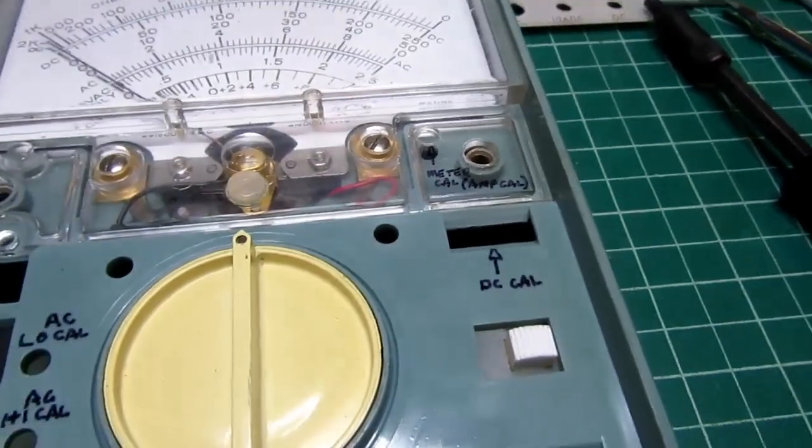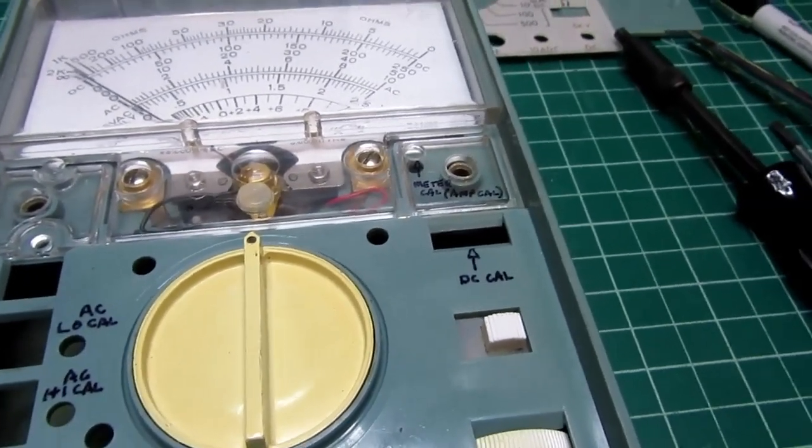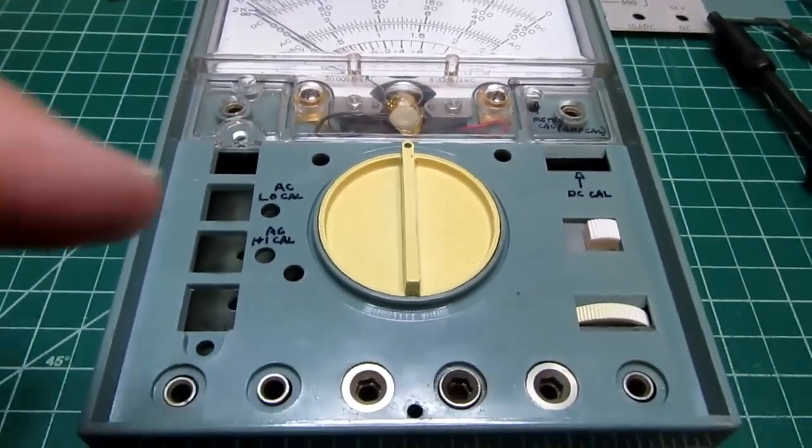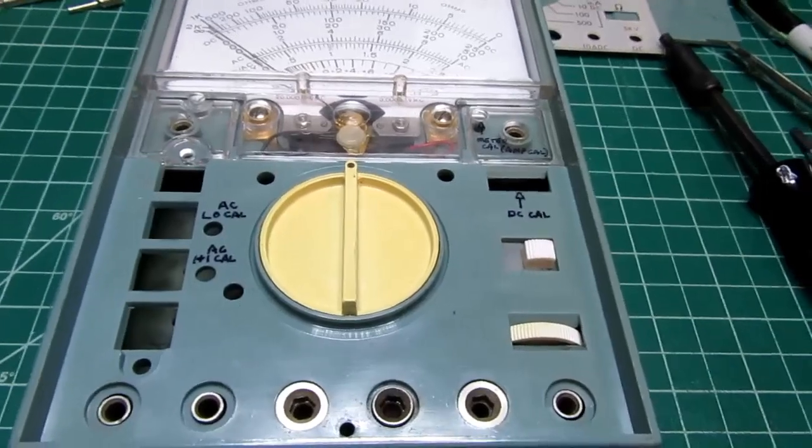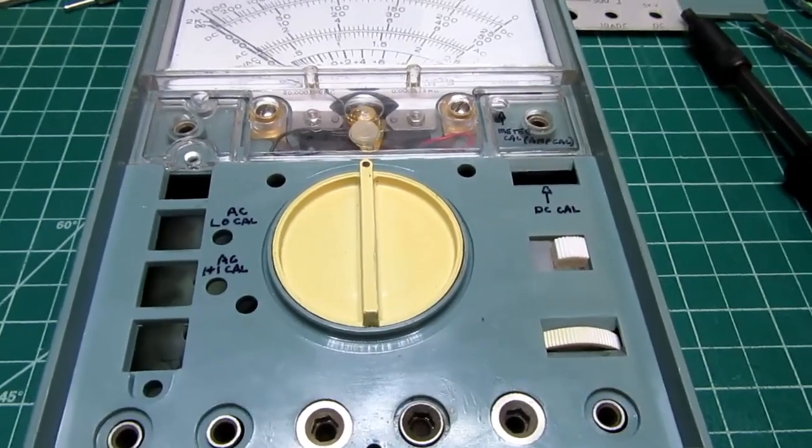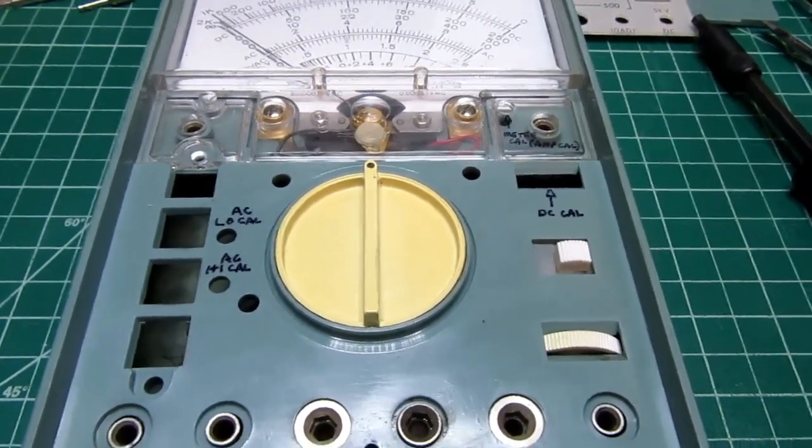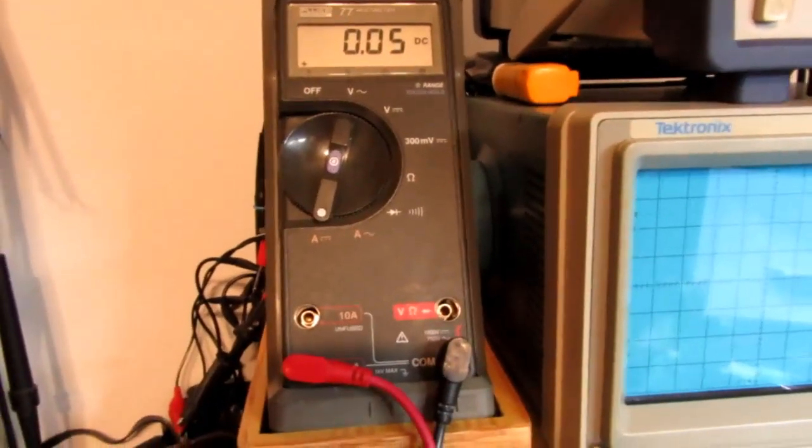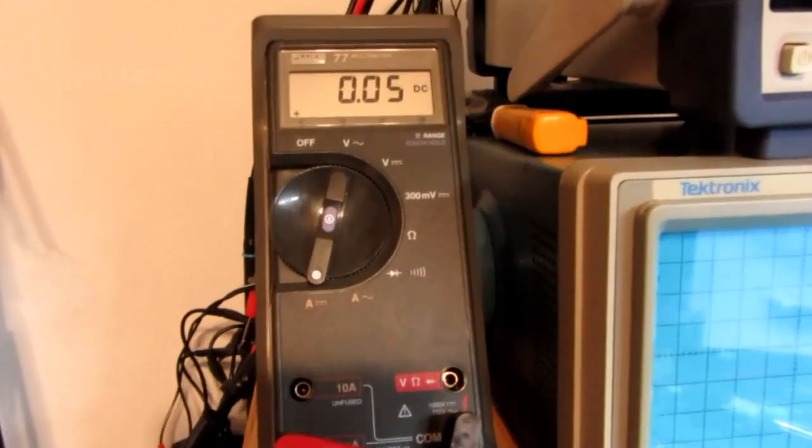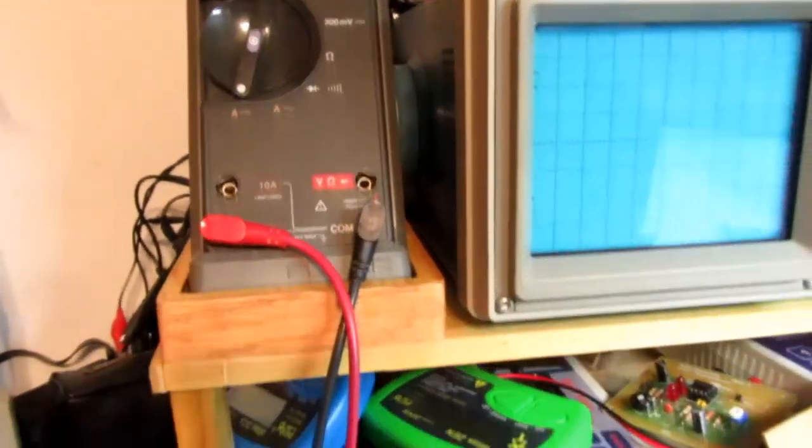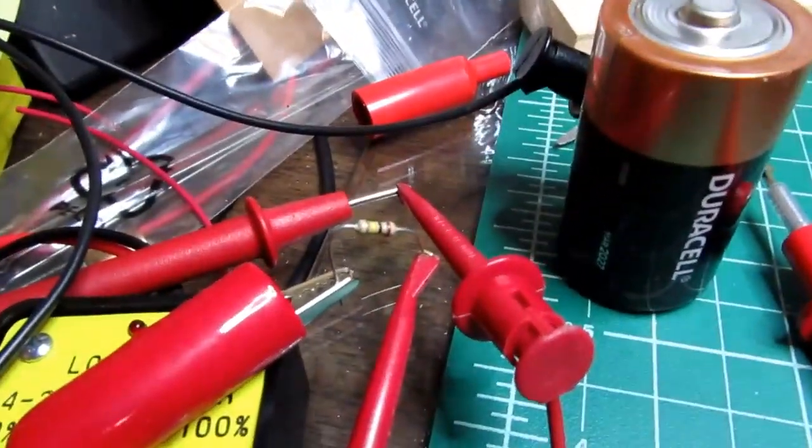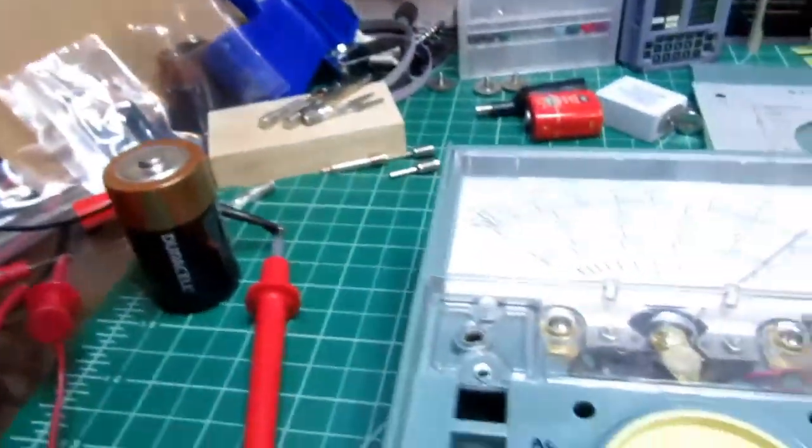I believe the meter is 50 microamps. If I can put an accurate 50 microamps through this meter, probably by putting another meter in series with it and fiddling with a power supply and a resistor, then I can get that calibrated and then go and start setting up the rest of it. I've got my digital multimeter set up to read milliamps, and I'm currently getting 0.05 milliamps near the end of its resolution. I'm achieving that with a 5-volt DC power supply through a 100k resistor in series with both meters.